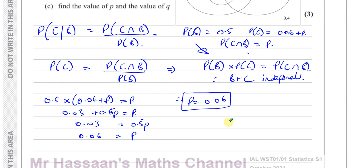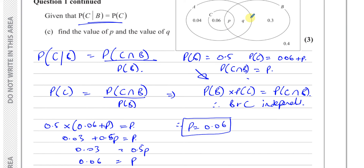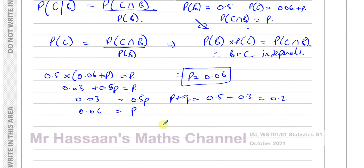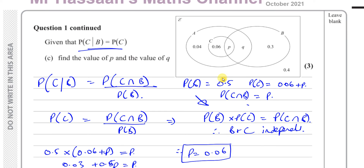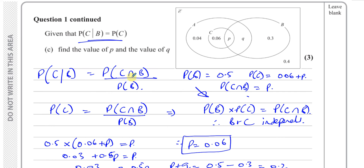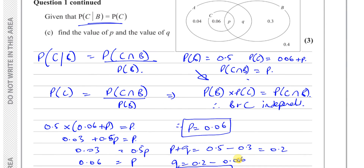That's one of the answers. The other is the value of Q. We know that P plus Q is the intersection part of B, and P plus Q equals 0.2 — because the probability of A intersection B was 0.2. So Q equals 0.2 minus P, which is 0.2 minus 0.06, giving Q equal to 0.14. We used the independence condition — probability of B times probability of C equals probability of their intersection — to find both P and Q.